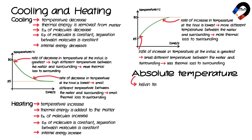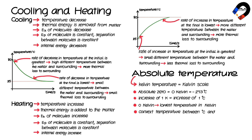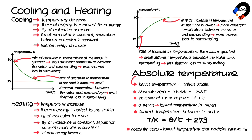Absolute temperature, or Kelvin temperature, uses the Kelvin scale. Absolute zero is 0 Kelvin, which is equal to −273°C. An increase of 1 Kelvin is the same change as an increase of 1°C. It is not possible to have a temperature lower than 0 Kelvin, meaning a temperature in Kelvin will never have a negative value. To convert between Celsius and Kelvin, use the equation: T (in Kelvin) = θ (in Celsius) + 273. At absolute zero, particles have no kinetic energy.